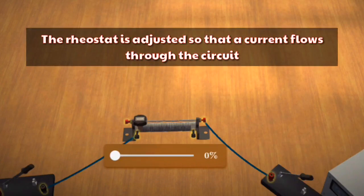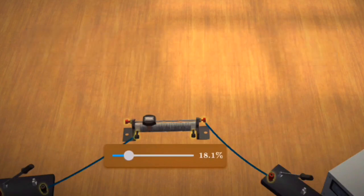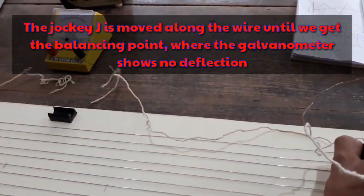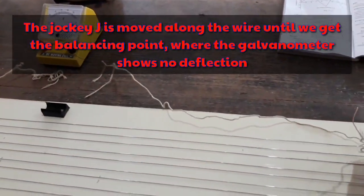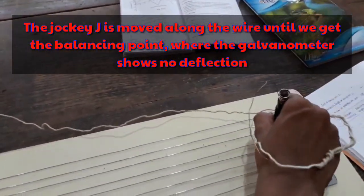The rheostat is adjusted so that a current flows through the circuit. The jockey J is moved along the wire until we get the balancing point where the galvanometer shows no deflection.